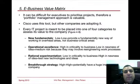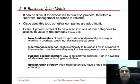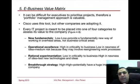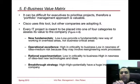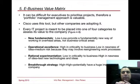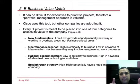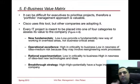The e-business value matrix is basically used by Cisco. It's difficult for a lot of businesses to prioritize projects, but what they do — and a lot of companies try to do this — is categorize the assets and their value to the company, whether it's new fundamentals, operational excellence, rational experimentation, or breakthrough strategy. What they're trying to do is identify each project and see how it fits within the organization's long-term or short-term goals and whether it's something they want to do.